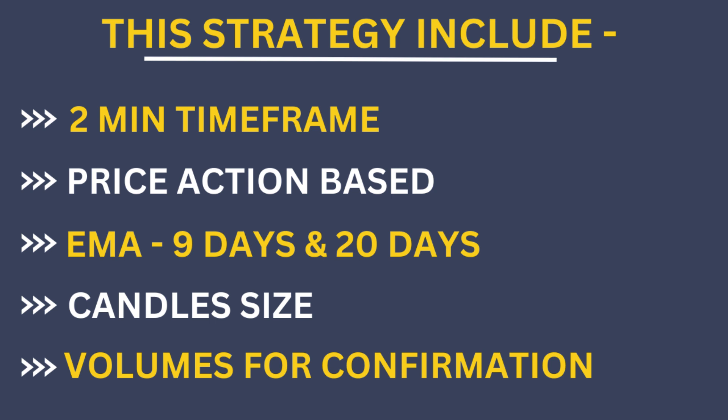The very first thing is exponential moving averages. You have to use 9 and 20 periods, because 9 and 20 periods denote the small time period, so we will use them. The second thing is candles — the candle's body size should be bigger before you take entry. The third is volume. Volume is going to give you confirmation that at which point there is no false signal in the trade, and if you take a trade, then you will definitely profit.